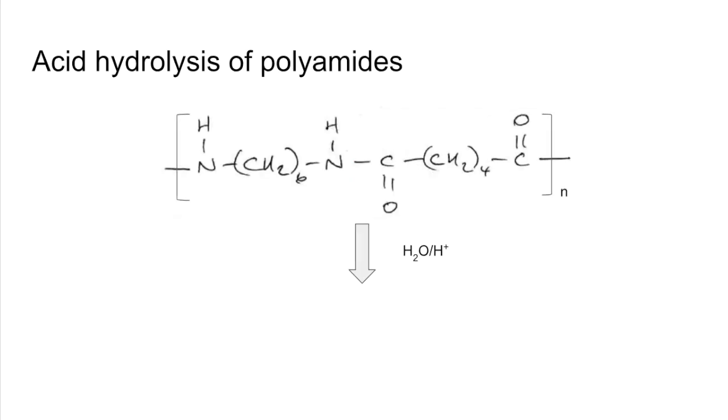If we move on to the acid hydrolysis of polyamides now, we're going to do the same thing. Break the amide bond. Put the H's back on there from the water and the OH back on there. What we've got to remember is that we've got acidic conditions, so we've got H+ ions in there. The nitrogen on the diamine can accept a proton because it's a base, so we're actually going to get that.